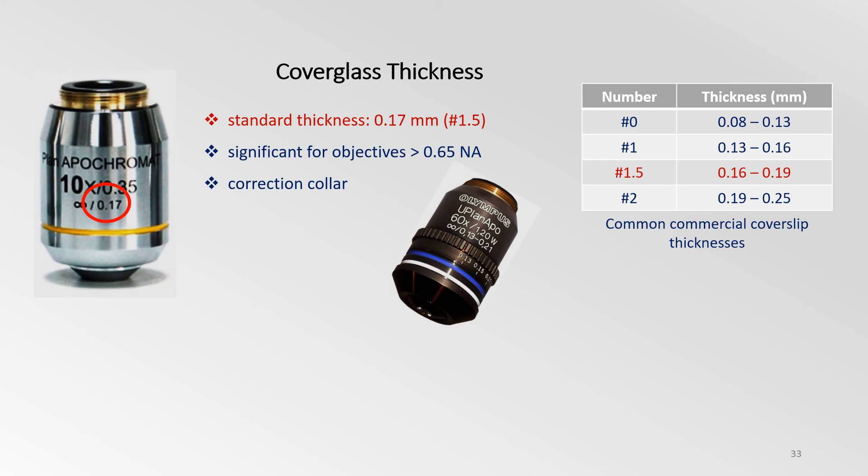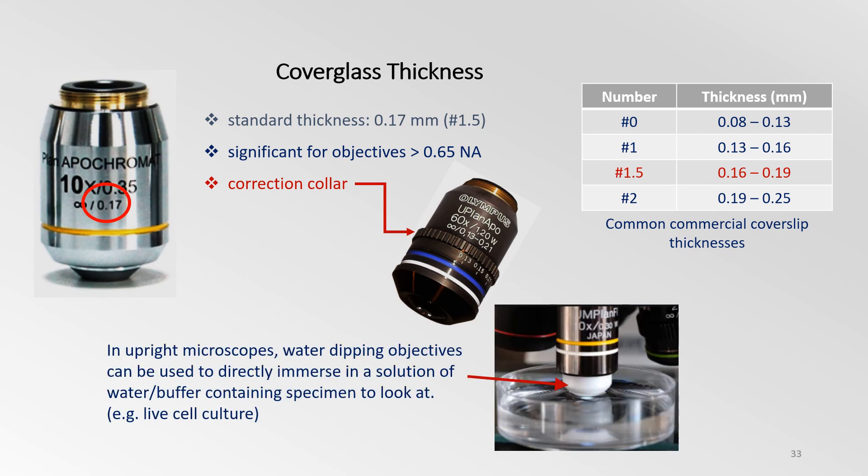Therefore, some more advanced objectives possess a correction collar or ring that can be turned to adjust the objective to the actual cover glass thickness which is in use. Water dipping lenses eliminate the need for coverslips. These objectives can be directly immersed in the solution of water which contains the specimens to look at.